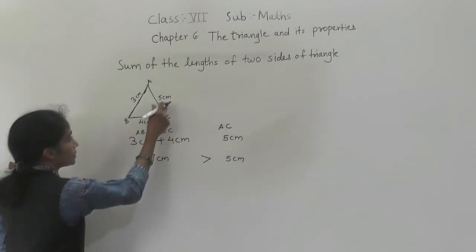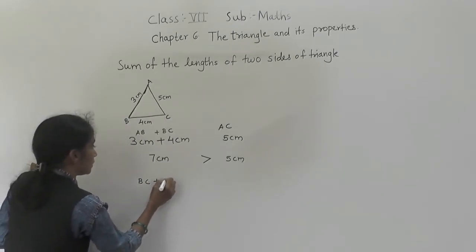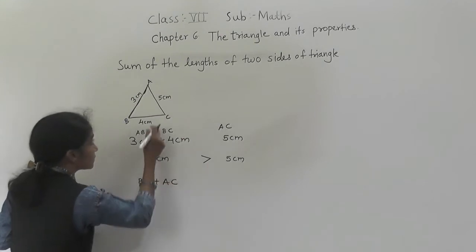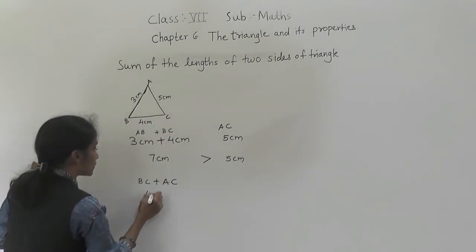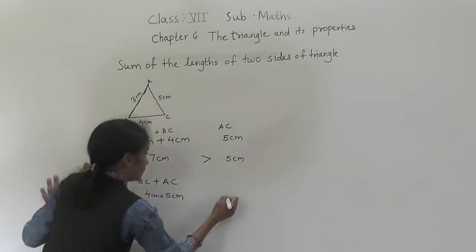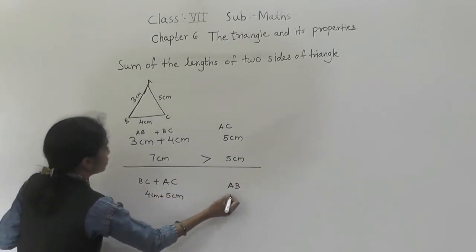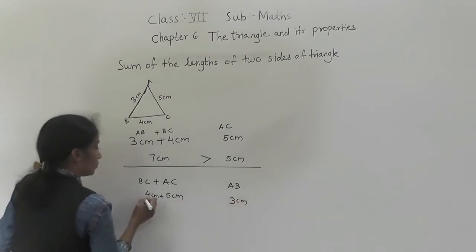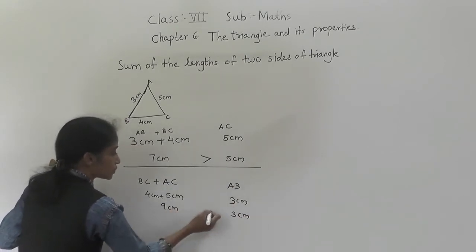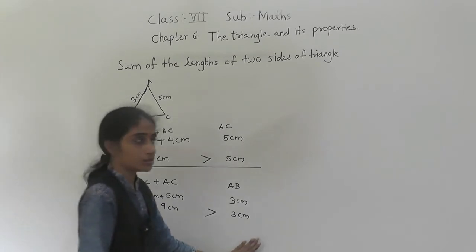Now next we will take the other two sides: BC plus AC. We will check if this is greater than the third side. BC is 4 cm, AC is 5 cm, and the third side is AB. AB is given as 3 cm. So 4 plus 5 is 9 cm, and 9 cm is greater than 3 cm. So the sum of the lengths of two sides of the triangle is greater than the third side.